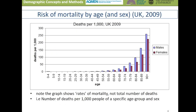This graph shows the risk of mortality by age and sex in the UK. We can see very low rates of deaths per thousand between the ages of 0 and around 59 or 60, and then a strong increase in mortality above the age of 50. We can also see higher levels of mortality for males than for females, so it's important to stratify not just by age but also by gender.